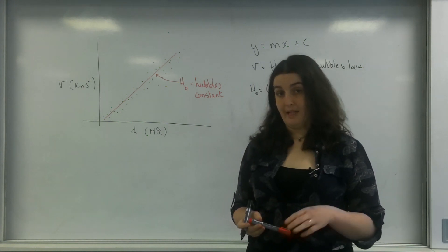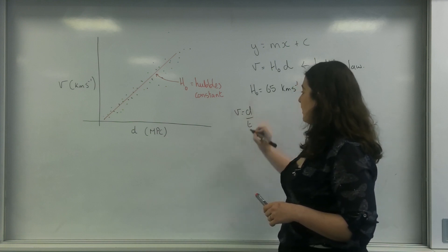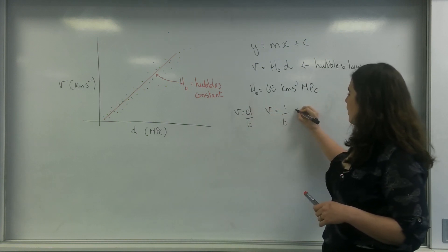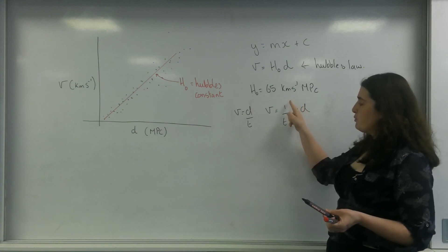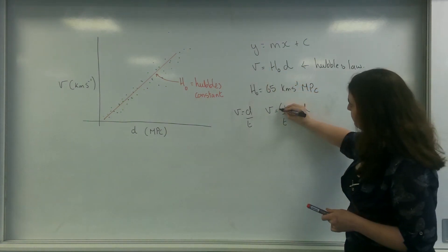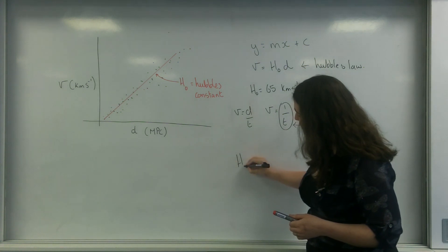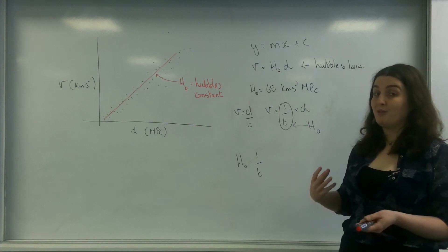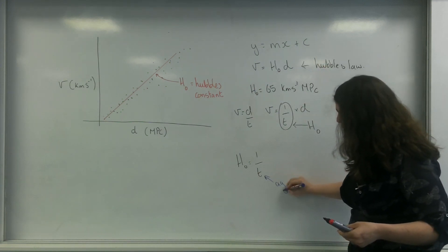There is a significance to Hubble's constant. Velocity is distance over time, so if I rearrange: velocity equals (1/time) times distance. Comparing this to Hubble's Law, v = H₀ × d, it shows that Hubble's constant equals 1 over time. And this time is the time that objects have been flying away from each other — which is particularly significant because this time is the age of the universe.